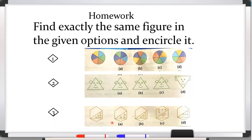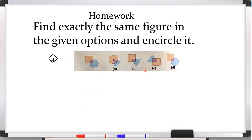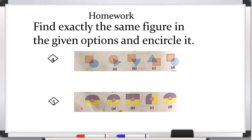Question number three: this is the original figure and we have given options A, B, C, and D — you have to find out the same figure. Question number four: again we have given this original figure and you have to find out the same figure. Question number five: this is the original figure and we have options A, B, C, and D — you have to find out the exactly same figure. Understood?